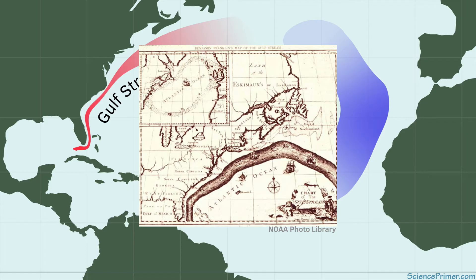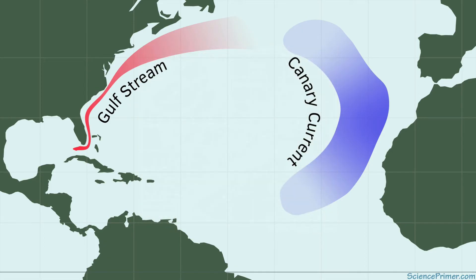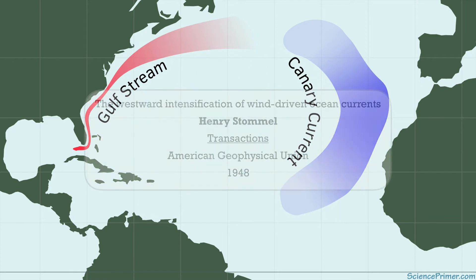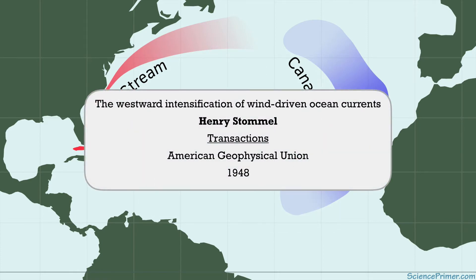Scientists and navigators have known about this phenomenon for a long time, but our current understanding of how and why western currents are so strong was not fully developed until the 1940s. One of the biggest contributions was by a scientist named Henry Stommel in a paper he wrote in 1948 called the Western Intensification of Wind Driven Ocean Currents.